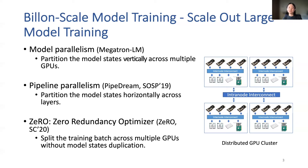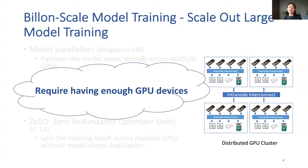Zero Redundancy Optimizer achieves state-of-the-art results for large model training in terms of training throughput and trainable model size. However, all of these deep learning parallel technologies require having enough GPU devices such that the aggregated GPU memory can hold the model states required for training. Because access to GPU clusters is prohibitively expensive, billion-scale models are still not reachable for many data scientists and even many academic and industrial institutions.